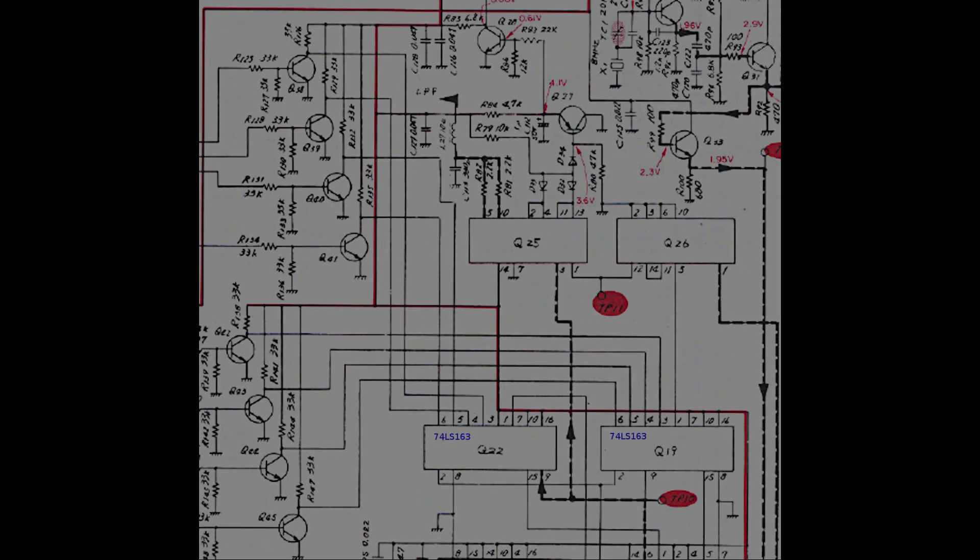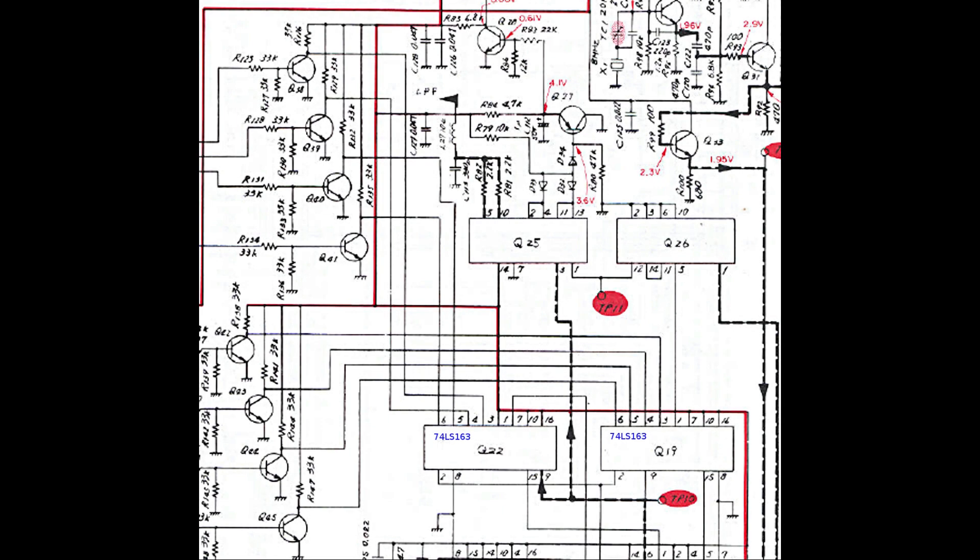The programmable divider is made with two chained 4-bit TTL counters that have a preset input. They are Q22 and Q19. When they come down to zero, they are automatically initialized with a fixed 8-bit value that depends on the selected frequency band.